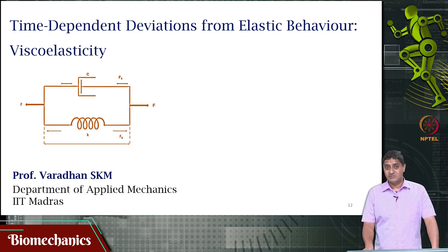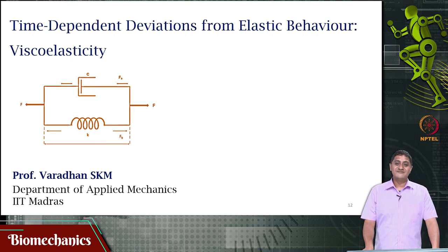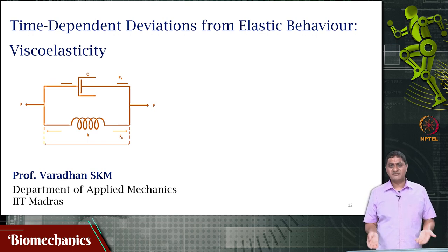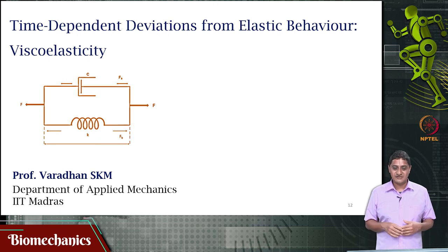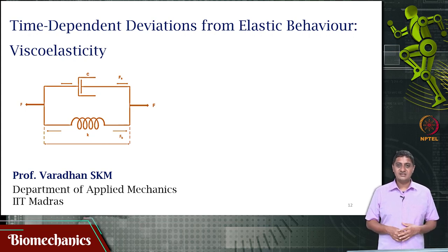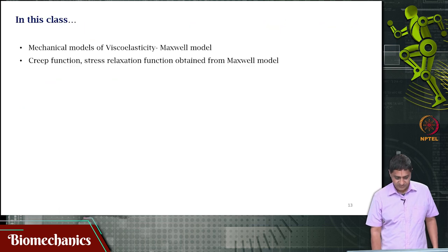What is viscoelasticity? Materials that exhibit or show or manifest both viscous and elastic behavior are called viscoelastic materials. Most biological materials — almost all the biological materials of interest to us — exhibit viscoelastic behavior. That means there will be a change in behavior as a function of time and as a function of applied strain, there will be strain rate effects, and there will be time-dependent deviation in elastic behavior.